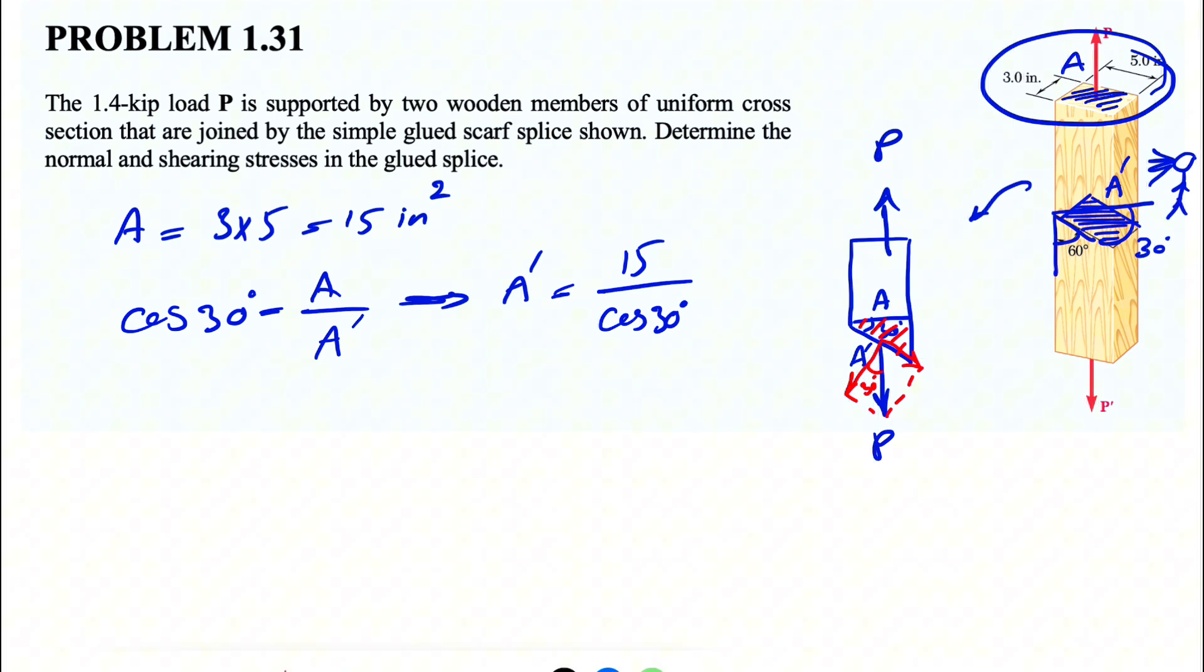So now that we have that angle, we know this will be P cosine of 30 degrees, and the other one would be P sine of 30 degrees. So pretty simple after this, we have to find the normal and shearing stress.